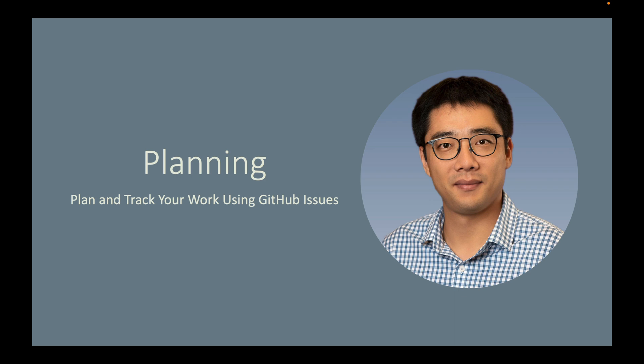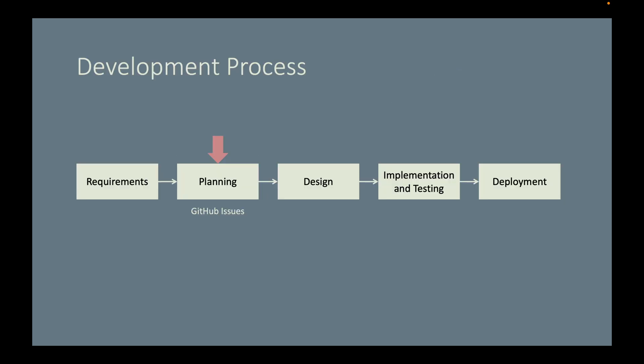Now that we have a good understanding of the requirements, let's do a little project planning. Here is the overview of our development process. We are now in the planning activity. First, let's create a Spring Boot project in IntelliJ, then create a repository on GitHub and push our Spring Boot project to GitHub.